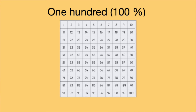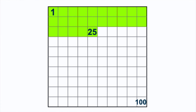For example, this chart with the numbers from 1 to 100 represents 100 percent. In the second chart, the green section is 25 percent and the white section is 75 percent. So if we add the green section, which is 25 percent, to the white section, which is 75 percent, we get 100.